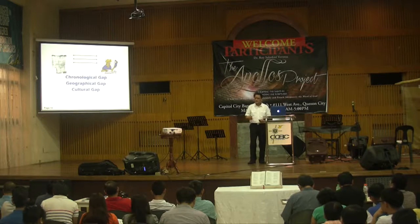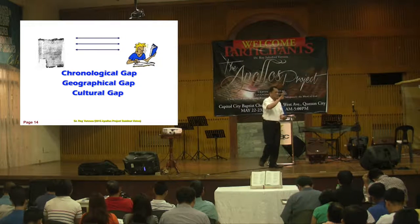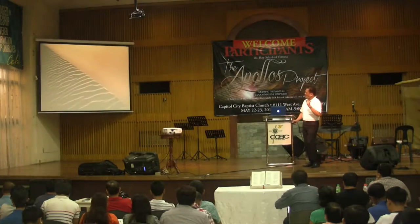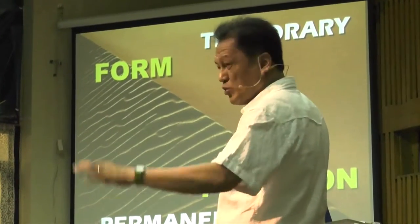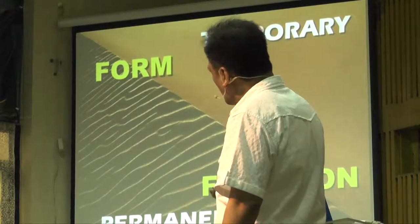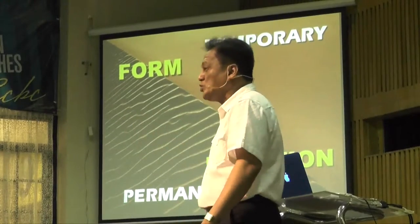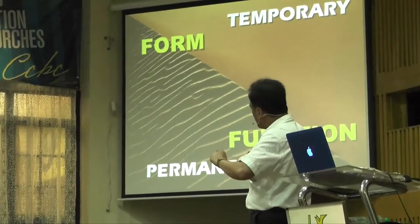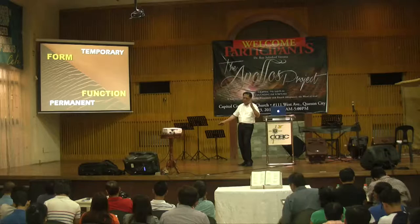Whenever you come across a cultural item in the Bible, you ask at least four questions. You try to engage with this in four ways. Number one, you ask what is the form — what's the cultural form — and then what is the function of that cultural form. And then you ask, is this something permanent? Is the form permanent, or is the form only temporary, but the function remains and the form can change? That's how you engage with the culture.